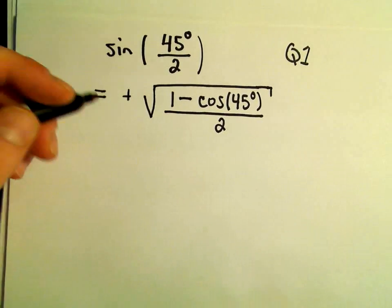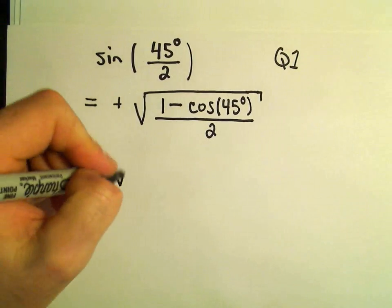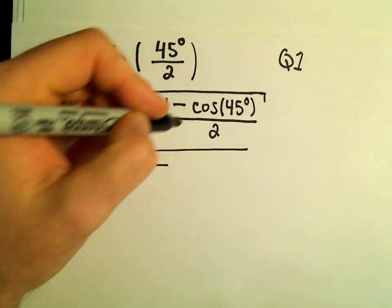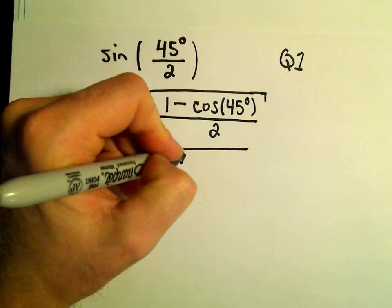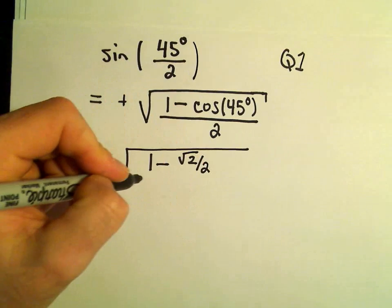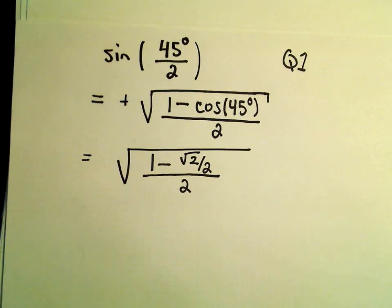I think we can clean this up a little bit. We've got the square root of 1 minus cosine of 45 degrees. That's square root of 2 over 2, all over 2.